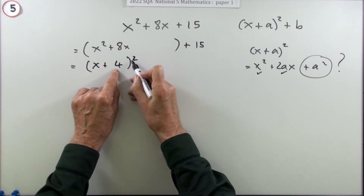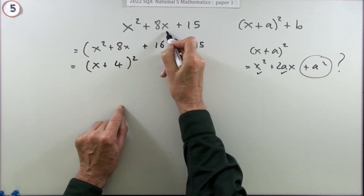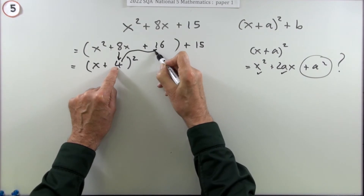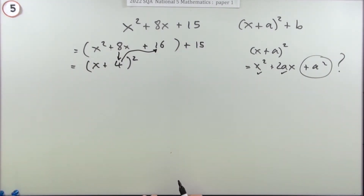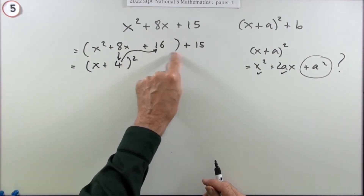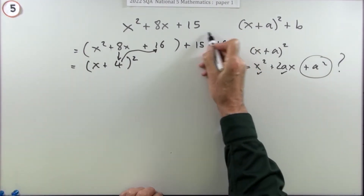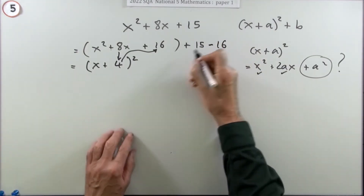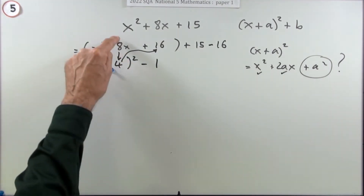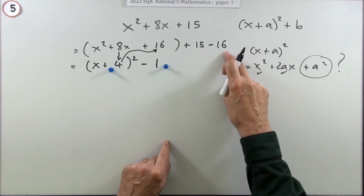The only way to get that 4 in the bracket means you'd have needed a 16 there. So the route is: start with x squared plus 8x, half the coefficient to get 4, giving (x + 4)². That squaring gives you the 16 you need. But originally there was only a 15, not a 16 - so if you add on a 16, balance it by taking off 16. Then 15 minus 16 equals minus 1, giving the answer (x + 4)² − 1. The marks are: one for forming the bracket by halving the coefficient, and one for correcting the constant at the end.